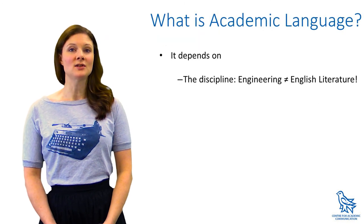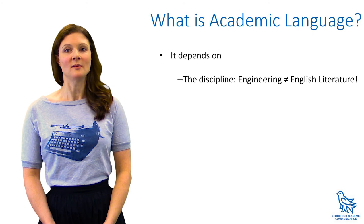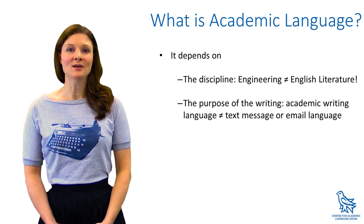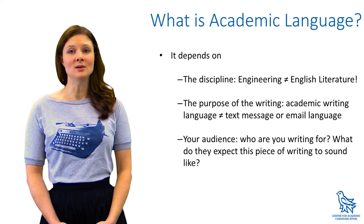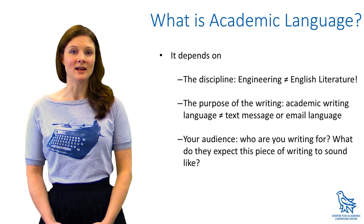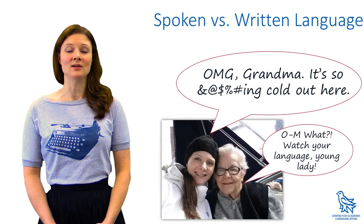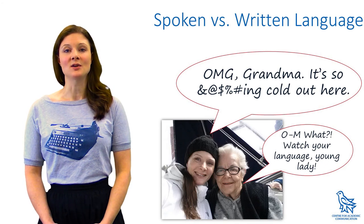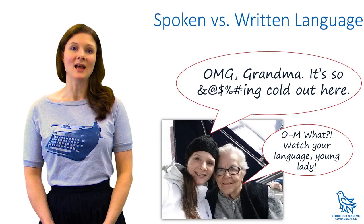Although some features do vary between academic disciplines — engineering, of course, sounds different from English literature — many essential features are shared. Academic writing is different from speech and from most other types of writing that you might be used to. Every type of communication you do is about knowing your audience. For example, you probably don't talk to your grandmother exactly the same way you talk to your friends. In the same way, you can't write an academic assignment in your speaking voice. Academic writing is more specific, concise, and well-planned.